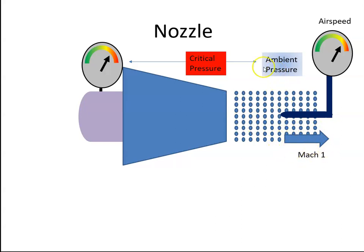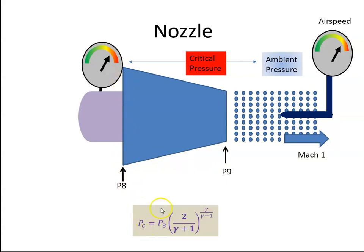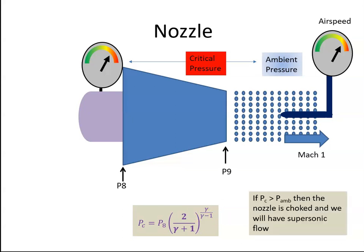If the ambient pressure is above the critical pressure, we won't get supersonic flow. Now, if this is station 8 at the entrance to the nozzle and station 9 at the exit, the critical pressure is the pressure at station 8 raised to the power of 2 over (gamma + 1), to the power of gamma over (gamma − 1). To reiterate: if the critical pressure is greater than the ambient pressure, then the nozzle is choked and we will have supersonic flow.